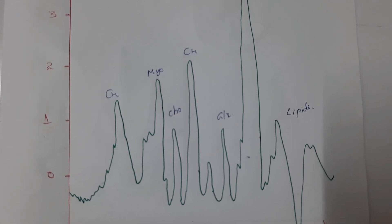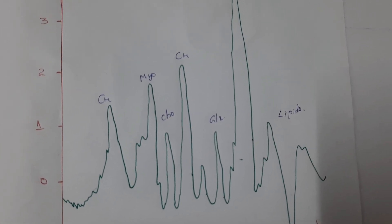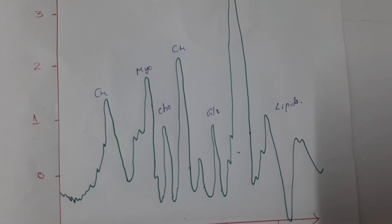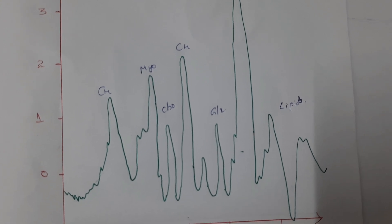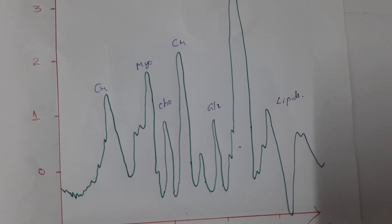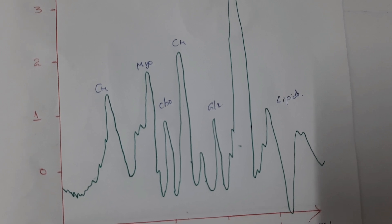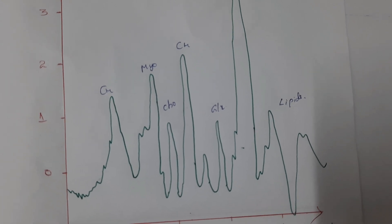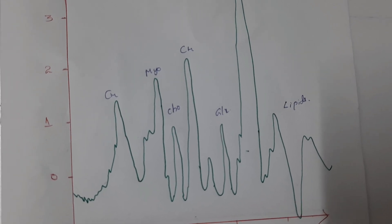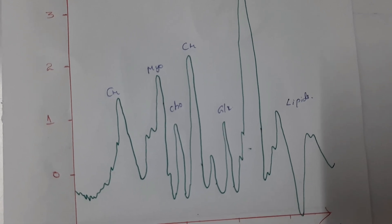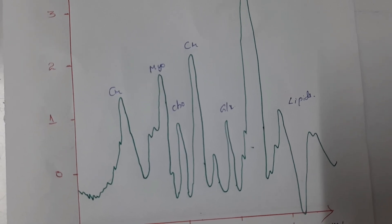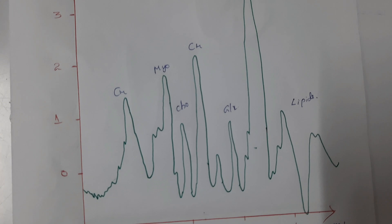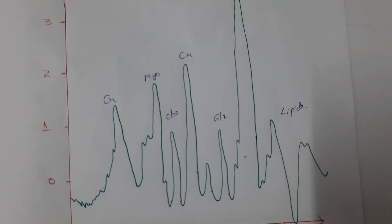Gliosis indicates the proliferation of glial cells into the injured areas of the central nervous system. When the central nervous system is damaged, there will be a non-specific change to the glial cells. Glial cells are the cells that support the nerve cells. If there is damage to the central nervous system, changes happen to the glial cells, and this condition is known as gliosis.